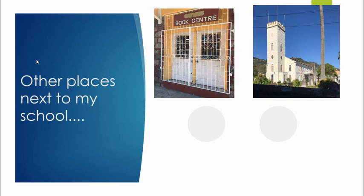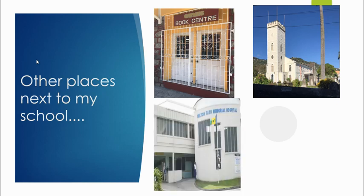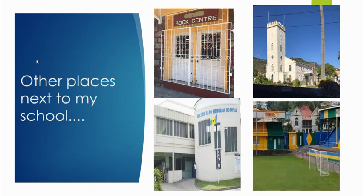How about this one? That's correct — the Anglican Church. Do you know this place? Have you ever been there? That's Milton Cato Memorial Hospital. And how about this place? I'm sure this is your favourite place. We go there on Tuesday or on Friday to have games. This is Victoria Park.